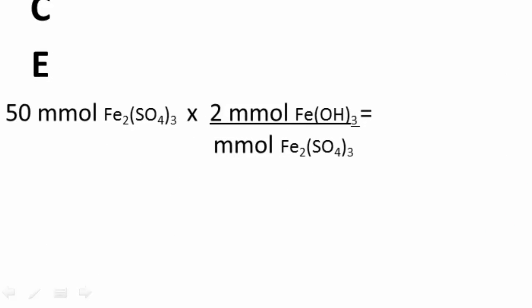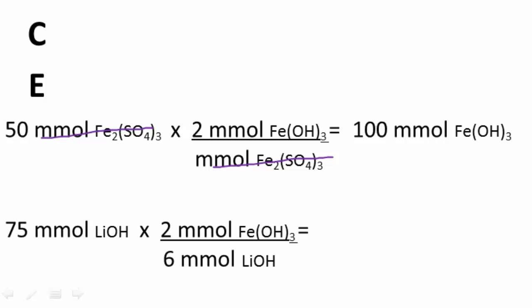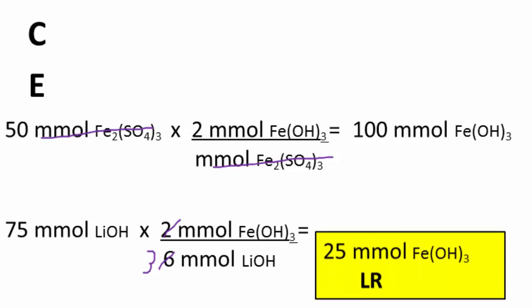Starting with iron(III) sulfate: there's a 2-to-1 ratio, so we multiply 50 millimoles by 2 millimoles Fe(OH)₃ per 1 millimole Fe₂(SO₄)₃. The millimoles cancel, and 50 times 2 gives 100 millimoles of Fe(OH)₃. Now for lithium hydroxide: starting with 75 millimoles, the mole ratio going to Fe(OH)₃ is 2-to-6, which simplifies to 1-to-3. So we divide 75 by 3 and get 25 millimoles of Fe(OH)₃.